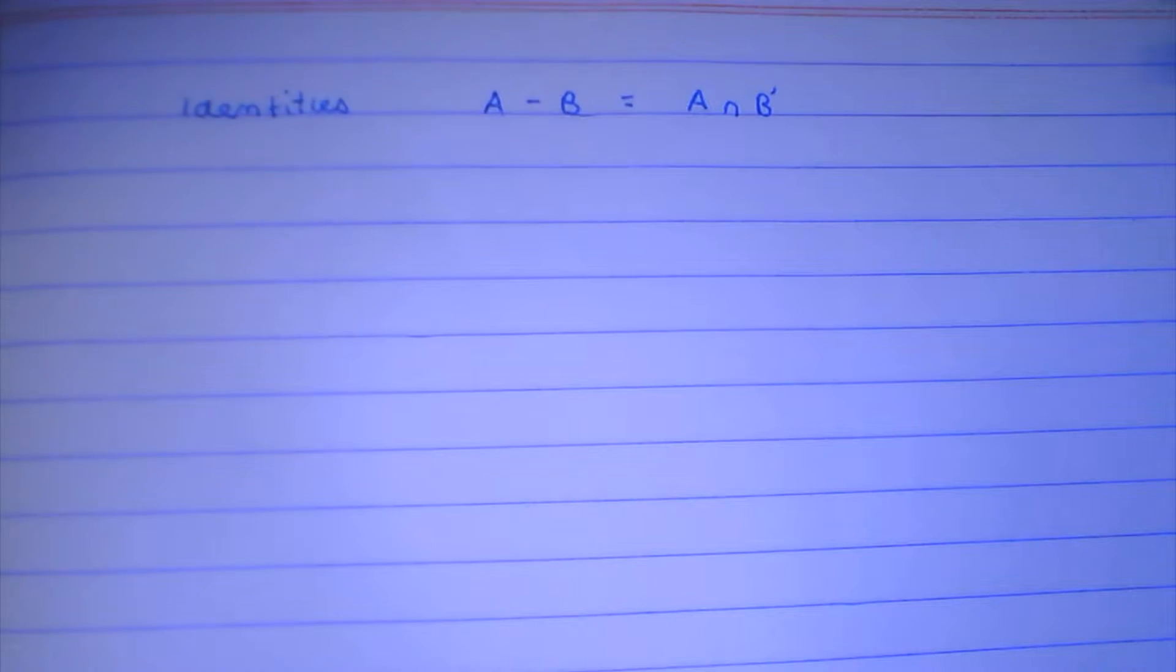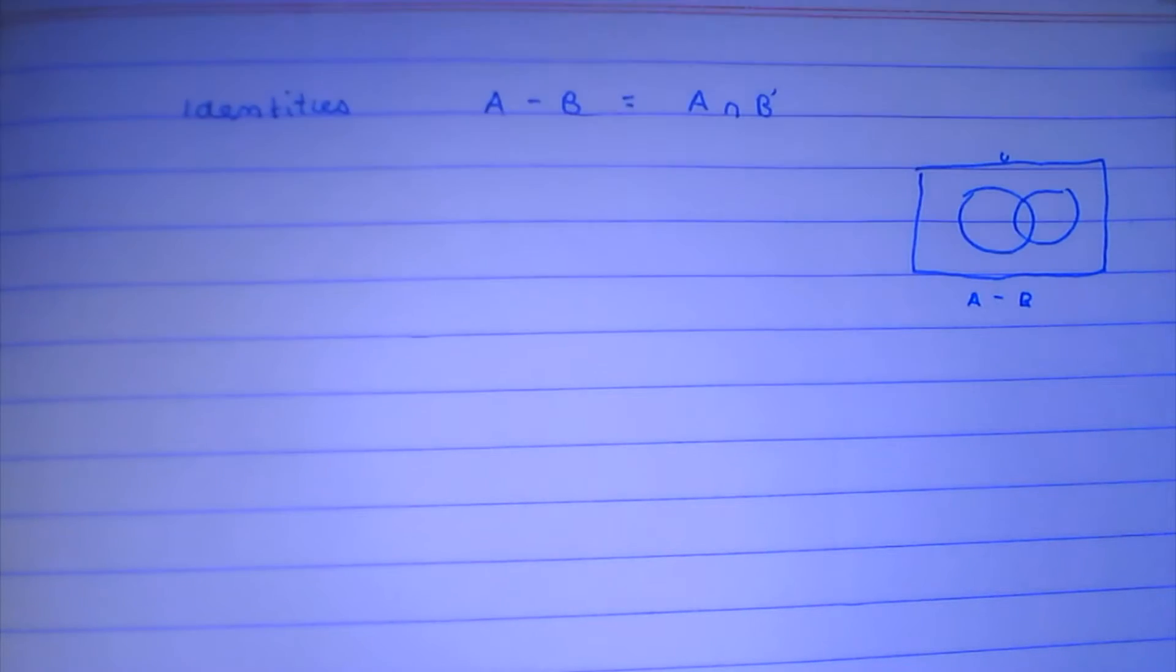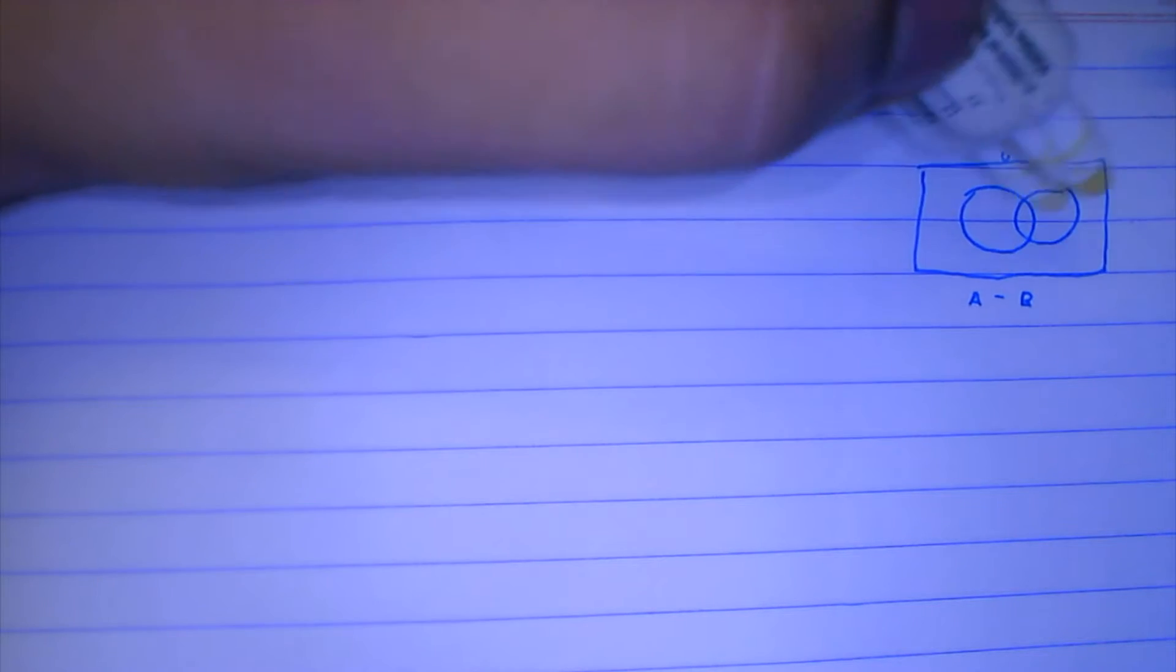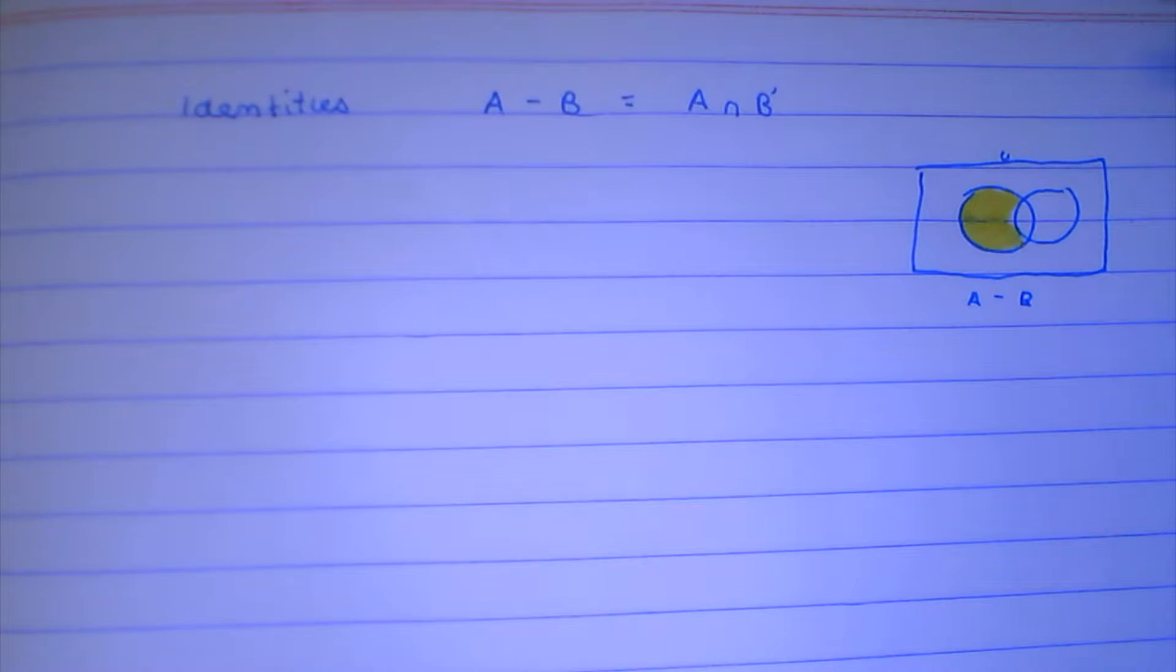A Venn diagram always helps. So let this be the universal set U, this is A, this is B, and you will see that A minus B is all this region.